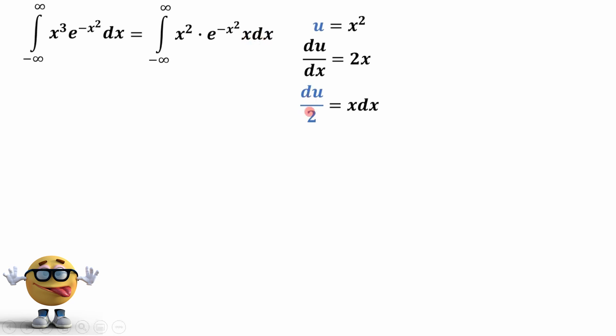So our x dx here is du over 2. Now, we also have to look at the limits of integration. So x is going from negative infinity to infinity, but we can split that up into negative infinity to 0 and then from 0 to infinity.